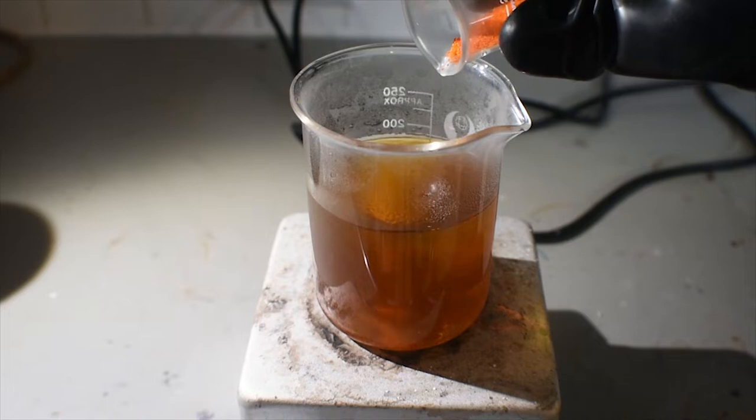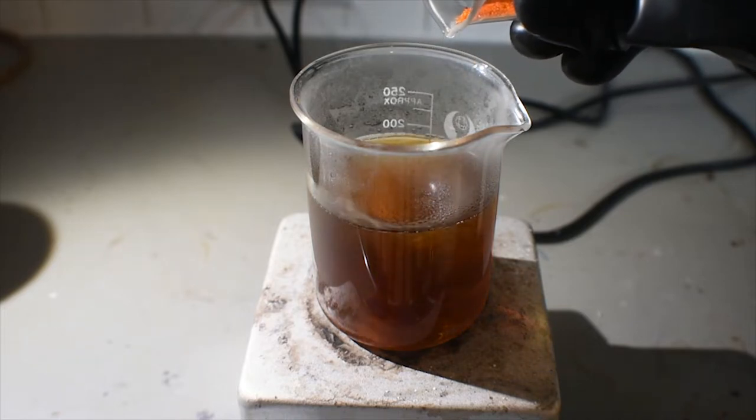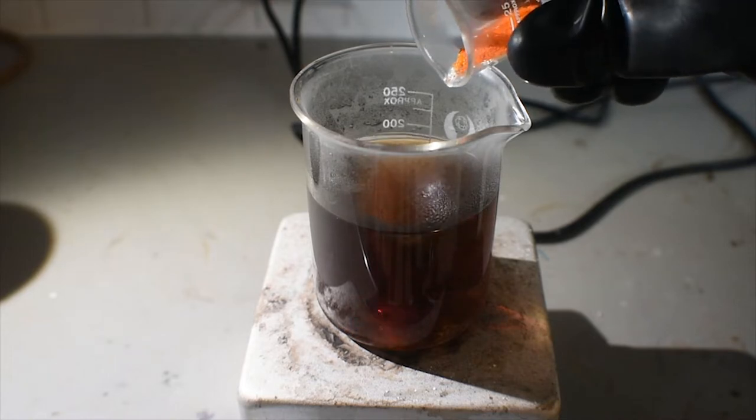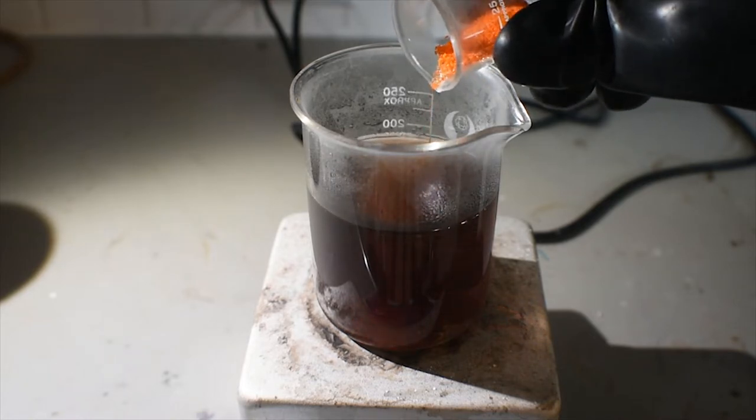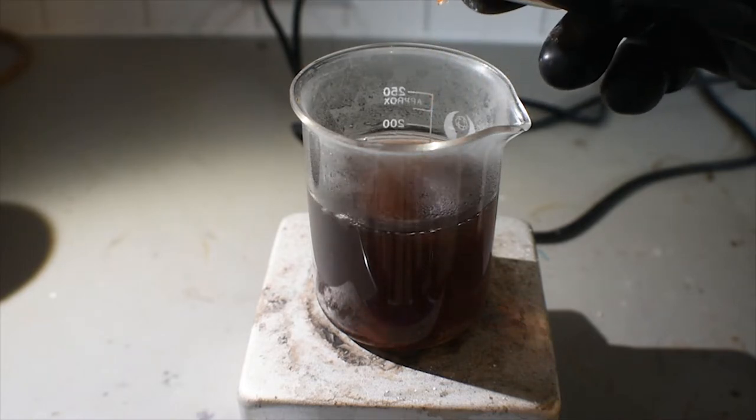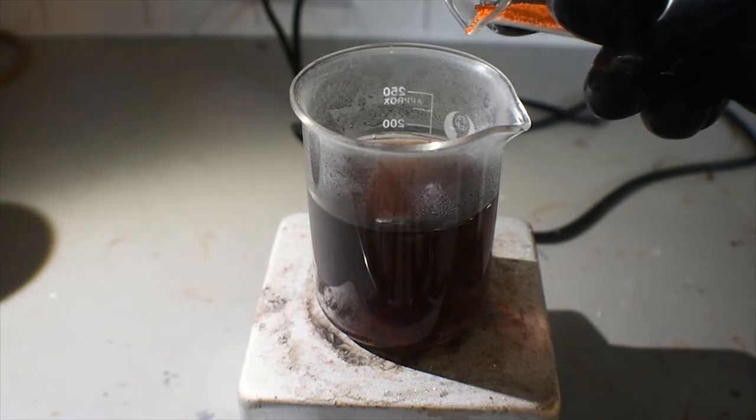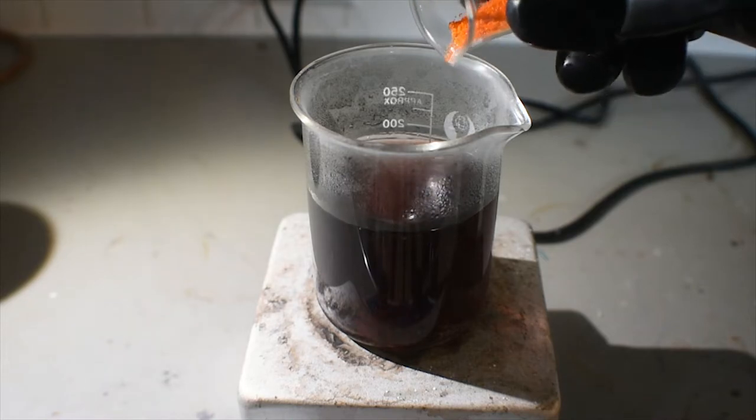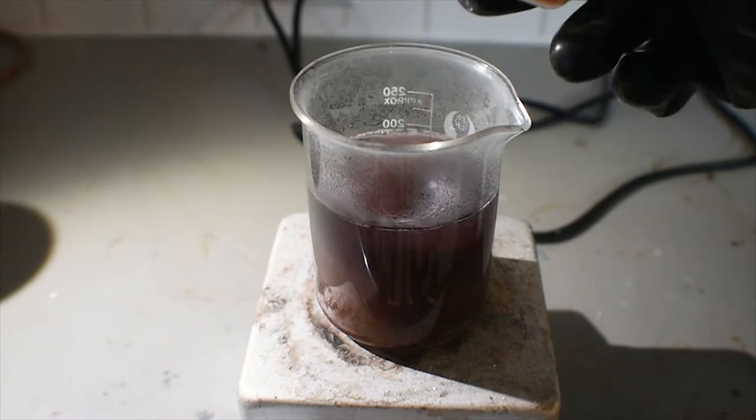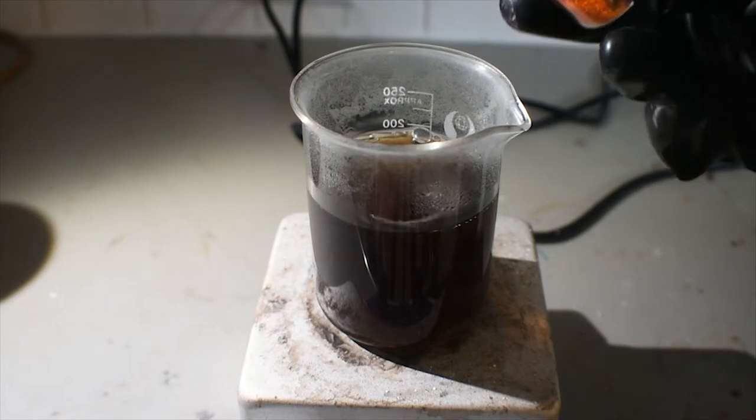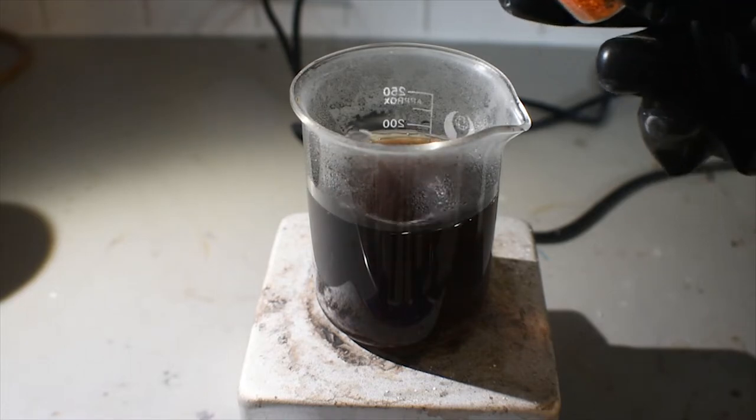As you can see, the color is changing, and there is evolution of CO2. As the dichromate is oxidizing the oxalic acid and oxalate, while simultaneously forming the potassium trisoxalate chromate. Do this slowly, as you obviously don't want to have it bubble out of the beaker.